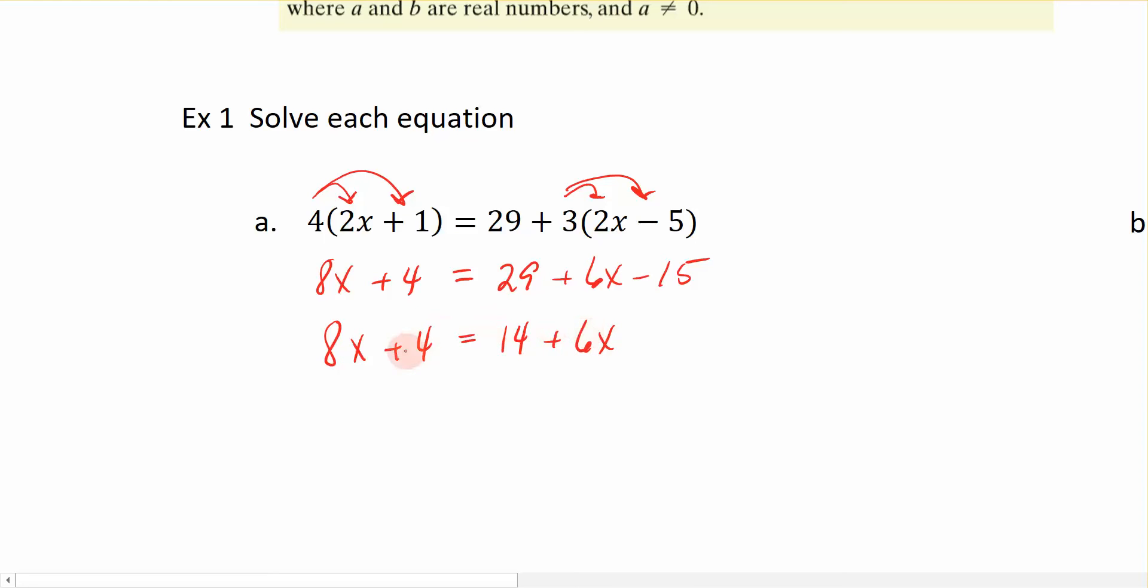It's at this point when I have both sides of the equal sign as simplified as I can that I now want to combine variables on the same side. So I have x's on both sides of the equal sign. So I am going to choose to move this 6x that's on the right, and I'm going to subtract it to the 8x that's on the left. Now, I choose to do that only because when I subtract 6x from both sides, it's going to give me a positive 2x.